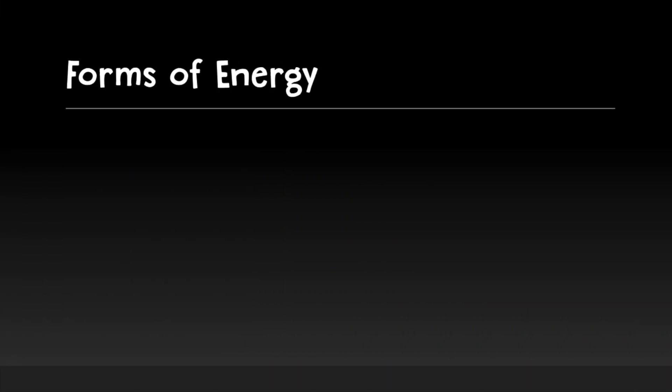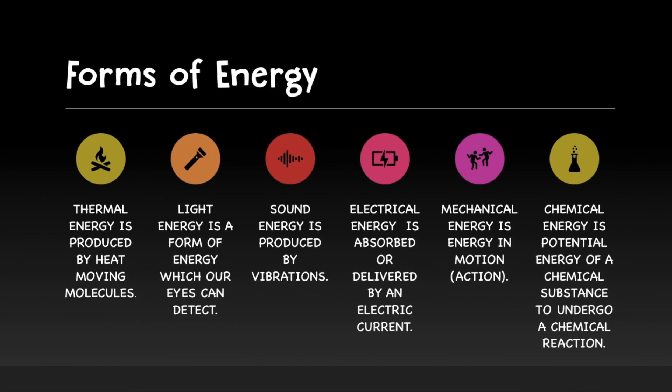Forms of energy. There are many forms of energy. Thermal energy is produced by heat moving molecules. Light energy is a form of energy which our eyes can detect. Sound energy is produced by vibrations. Electrical energy is absorbed or delivered by an electric current, through a plug or through batteries. Mechanical energy is energy in motion, action, moving parts. Chemical energy is the potential energy of a chemical substance to undergo a chemical reaction.